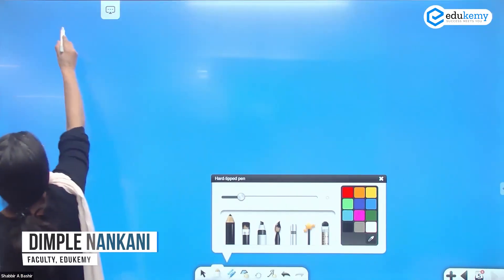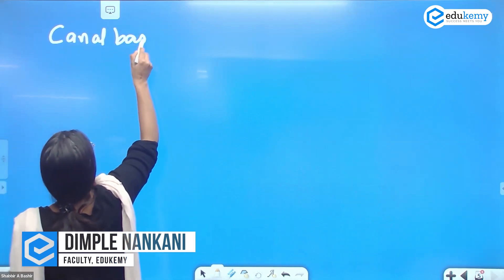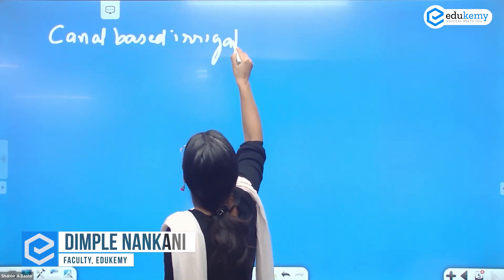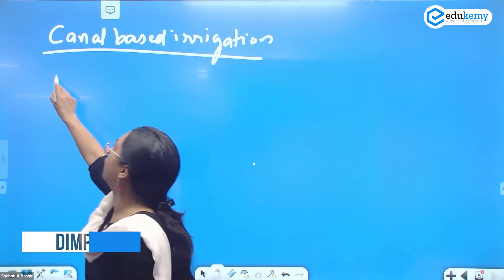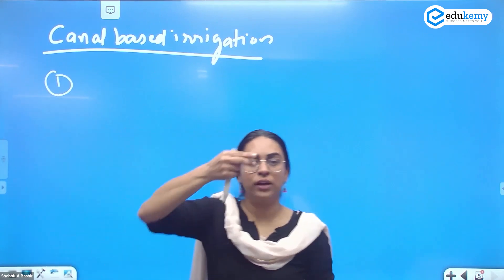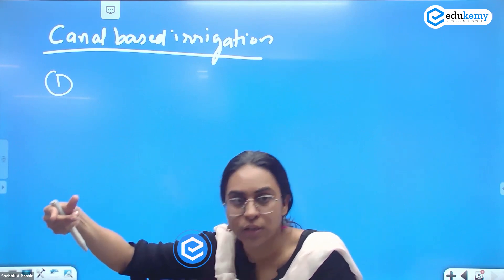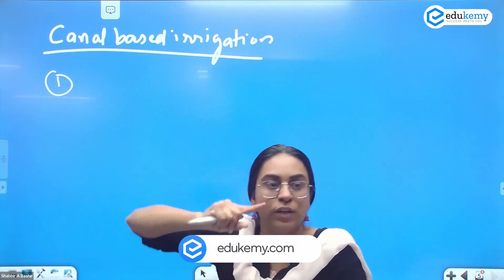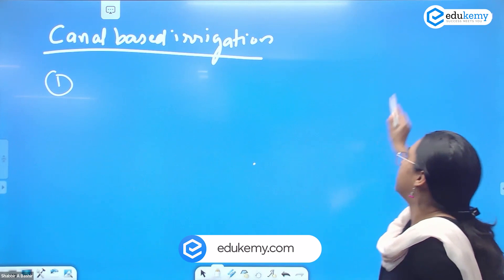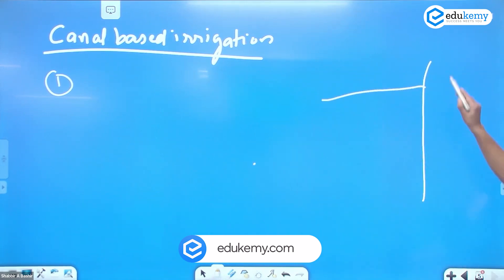Canal-Based Irrigation. For canal-based irrigation, you need to take out a canal from the river. That canal is used for supplying the water to the fields. So for example, this is a river, you dig out a canal.